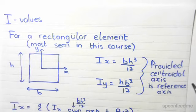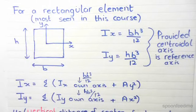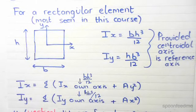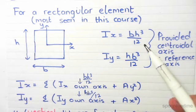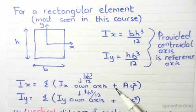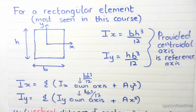Now this is provided the centroidal axis is the reference axis. What happens if our arbitrary axis, which is the reference axis, is not the centroidal axis? Then Ix equals to Ix on axis, in other words its centroidal axis, so bh³ over 12 as you can see, plus A times y².